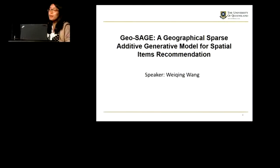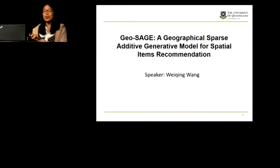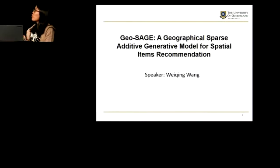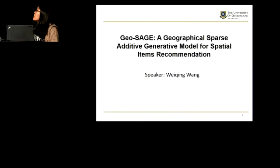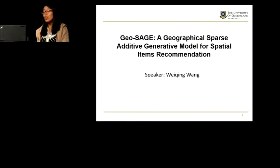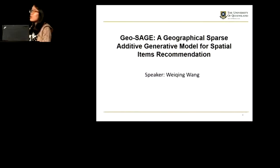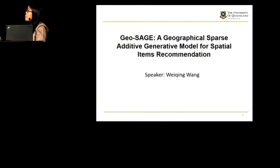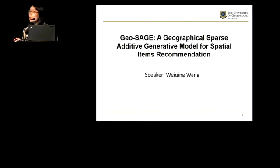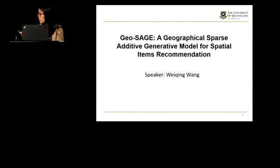Hello, everyone. My name is Wei-Ching Wang, coming from the University of Queensland. Today, I'm here to present a novel model for spatial items recommendation in location-based social networks, which is also denoted as GeoSarge.